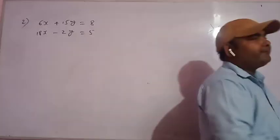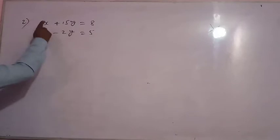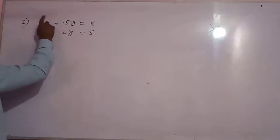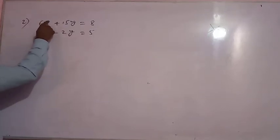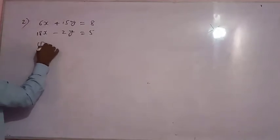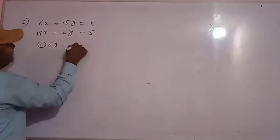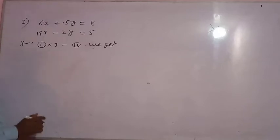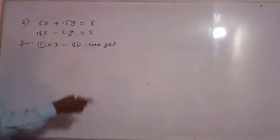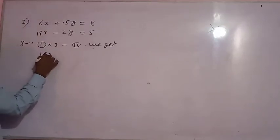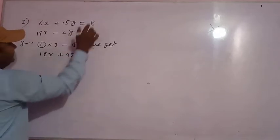Now see the second question of the elimination method. In this question you can see it is 6x and 18x. We will not use the coefficient of x from both equations because it is easy to make them equal. By multiplying the first equation by 3, 3 times 6x is 18x. So multiply only the first equation by 3: 3 times 6x is 18x, 3 times 15y is 45y, and 3 times 8 is 24.